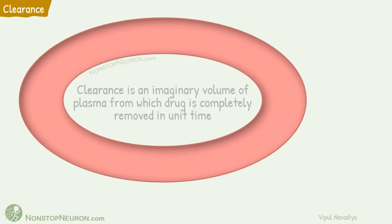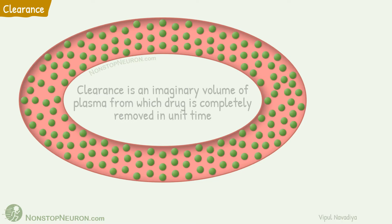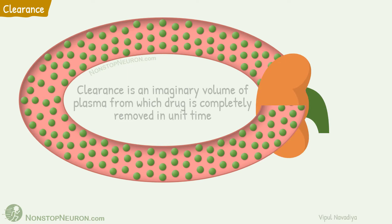This is the circulatory system containing all the plasma, and these are drug molecules dispersed throughout the plasma. The density of the molecules represents the concentration of drug. This is the organ of elimination — it represents all the organs through which drug is eliminated.